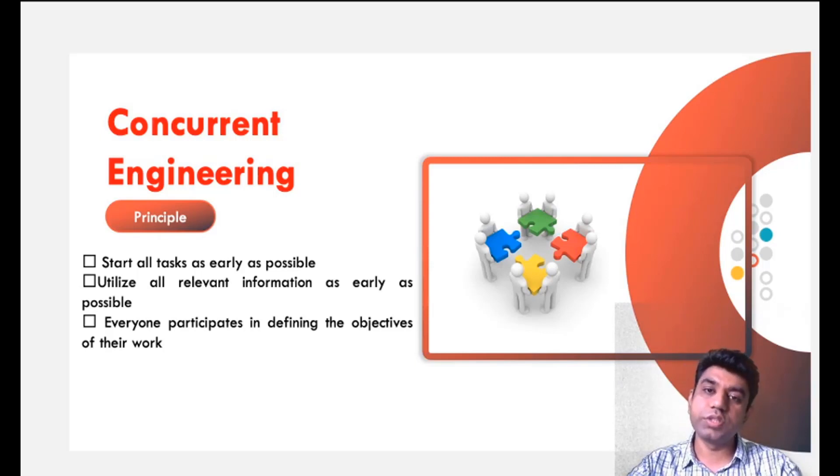It should not be started in such a way that it will generate the defect in the product, but as early as possible. Then the second principle is utilize all the relevant information as early as possible. Everyone participates in defining the objective of their work. Involvement of all the people at the early stage is required in order to produce early.